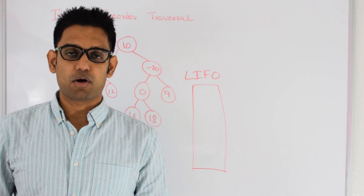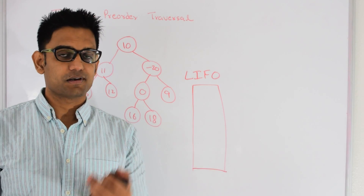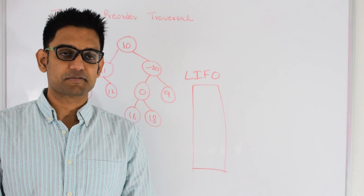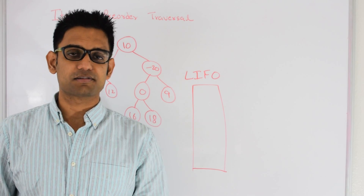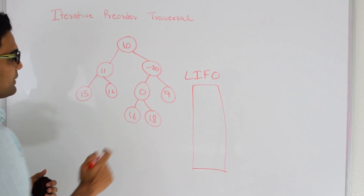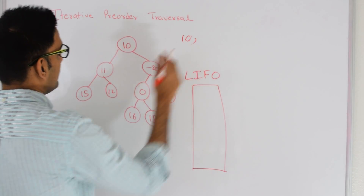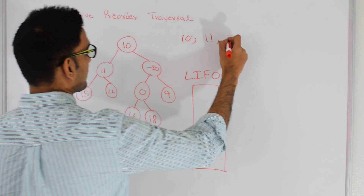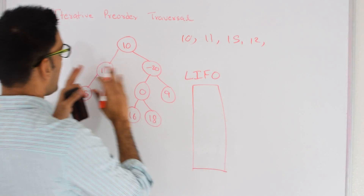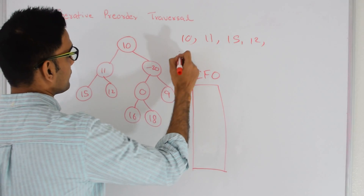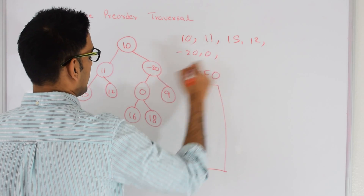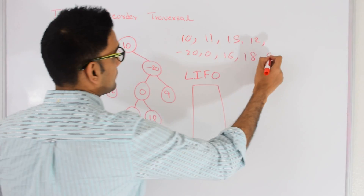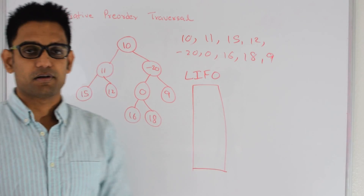Let's quickly recollect what pre-order traversal is. Pre-order traversal is: visit, left, and right. So we print the node first, then visit everything on the left side, and then visit everything on the right side, doing this recursively for every node. For this binary tree, we print 10 first, then everything on the left side: 11, then 15, then 12. Now everything on the left side of 10 is printed, so we go to the right side: minus 20, 0, 16, 18, and then 9. So this is the pre-order traversal for this tree.